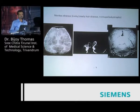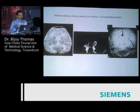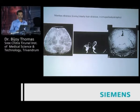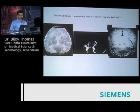Menkes kinky hair disease—I want to show some rare cases so you can optimize your sequences. Conventional imaging shows only delayed myelination, but in all these cases you should do a TOF MR angiography. You can see very tortuous, kinked vessels, and you can also order a CT study of the skull to see the Wormian bones—which can be seen in other conditions too. If you see the combination, this is Menkes kinky hair disease.